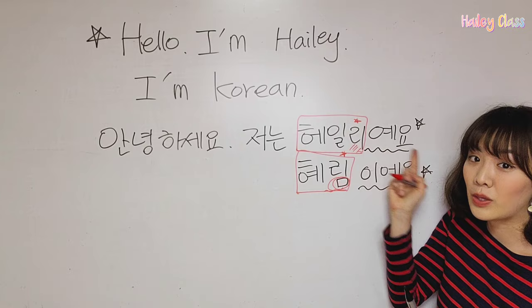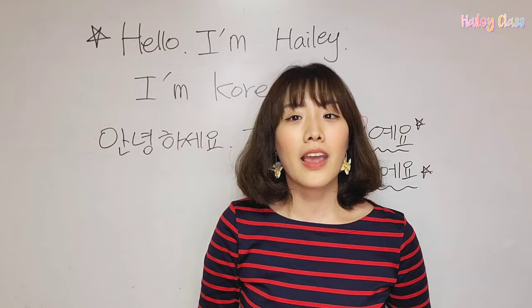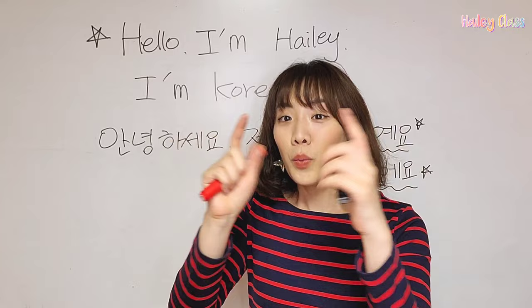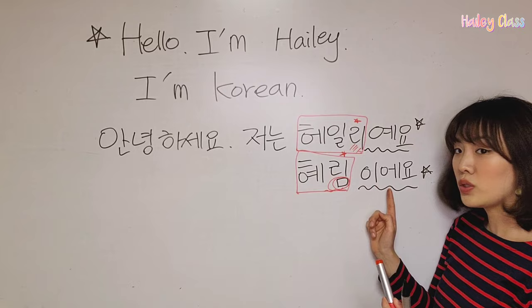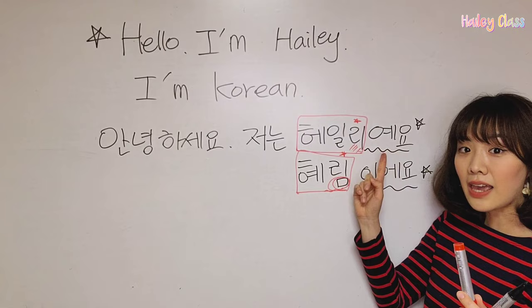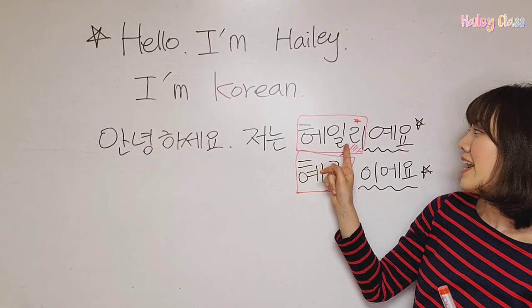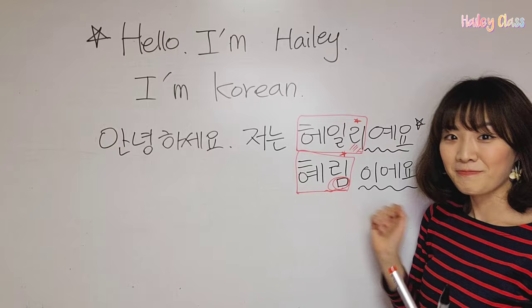Go to Google Translate, write your name, and translate it into Korean. With that name, if you have a final consonant, you have to choose 이에요. But if you don't have any final consonant, it has to be 예요. So: 안녕하세요, 저는 혜림이에요. 안녕하세요, 저는 혜림이에요. Got it? Good.